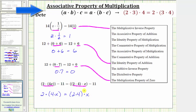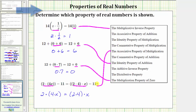Notice how we have a product where the factors in the parentheses or grouping symbols has changed. This is the associative property of multiplication, which is listed here. I hope you found this helpful.